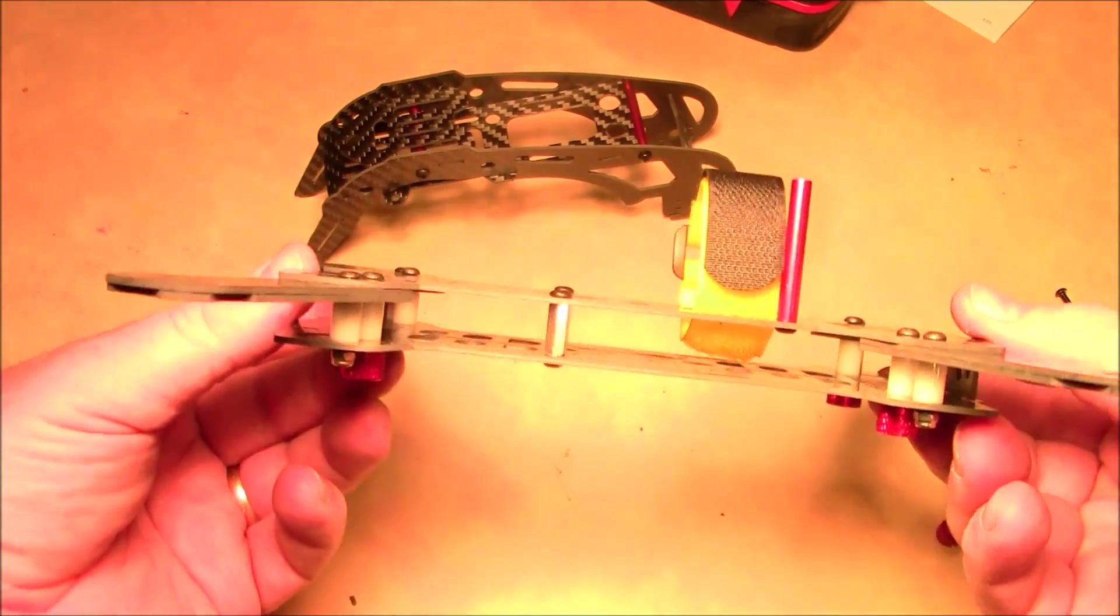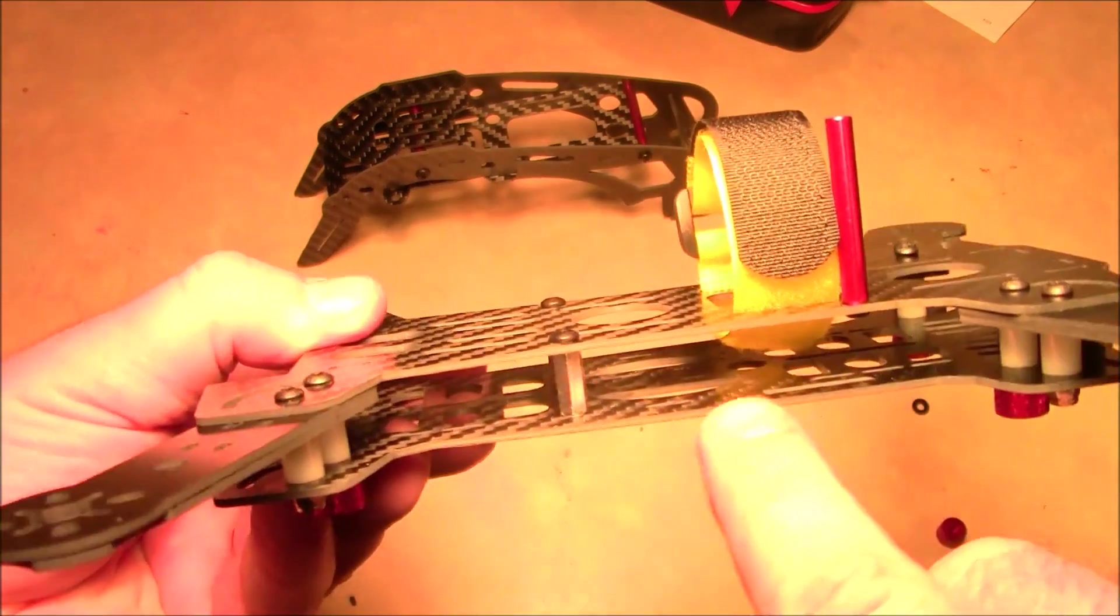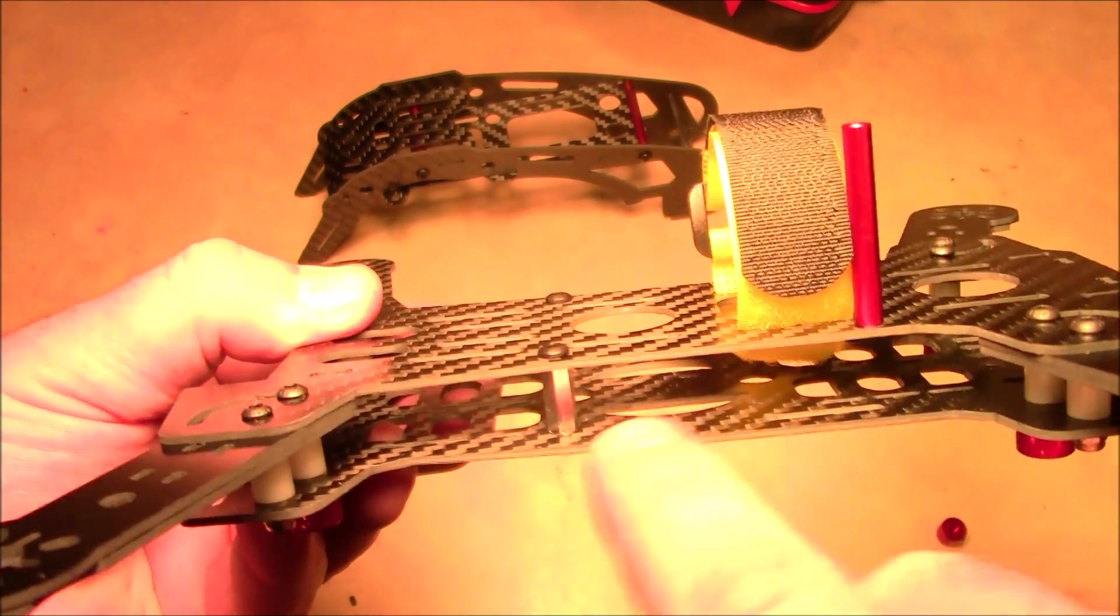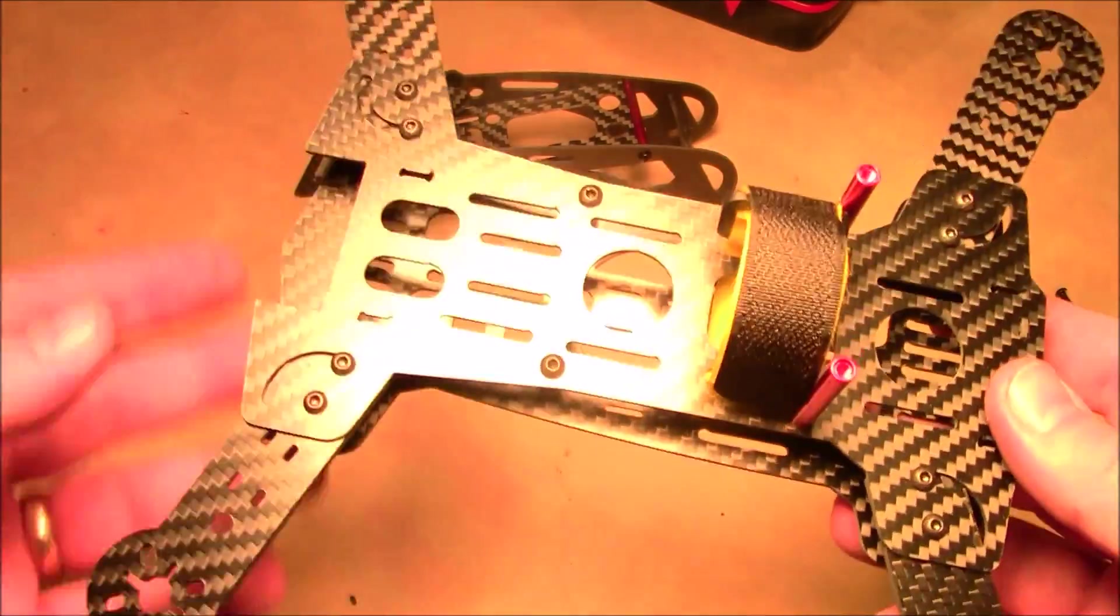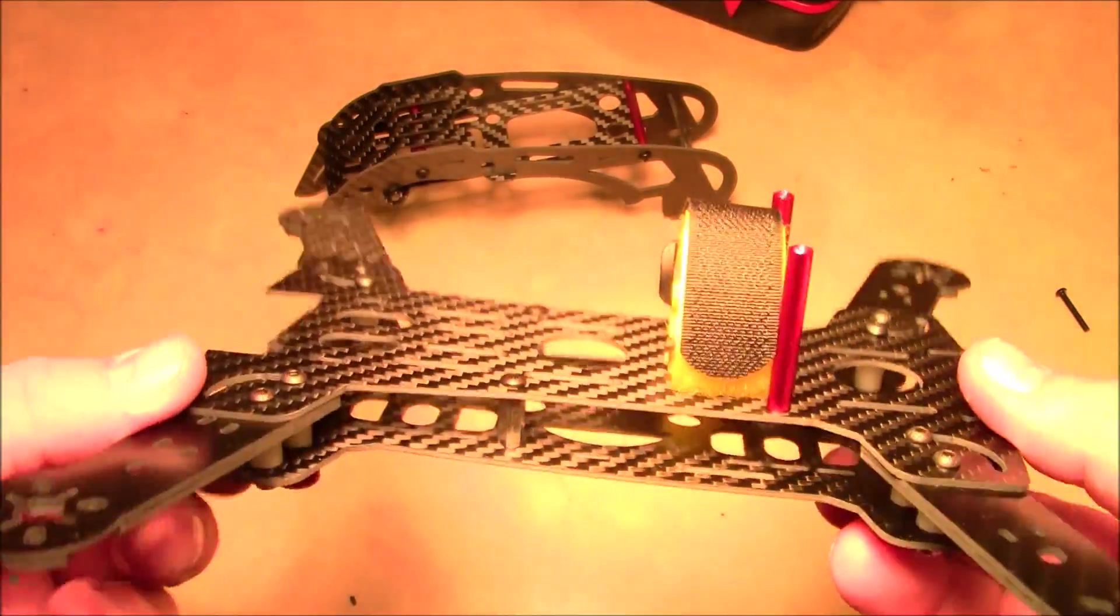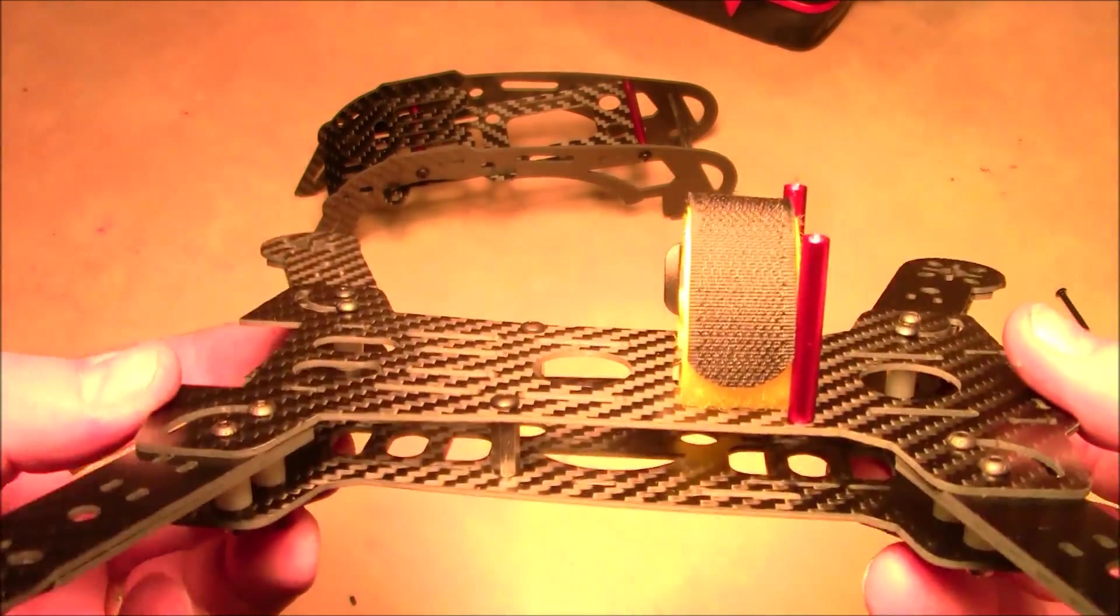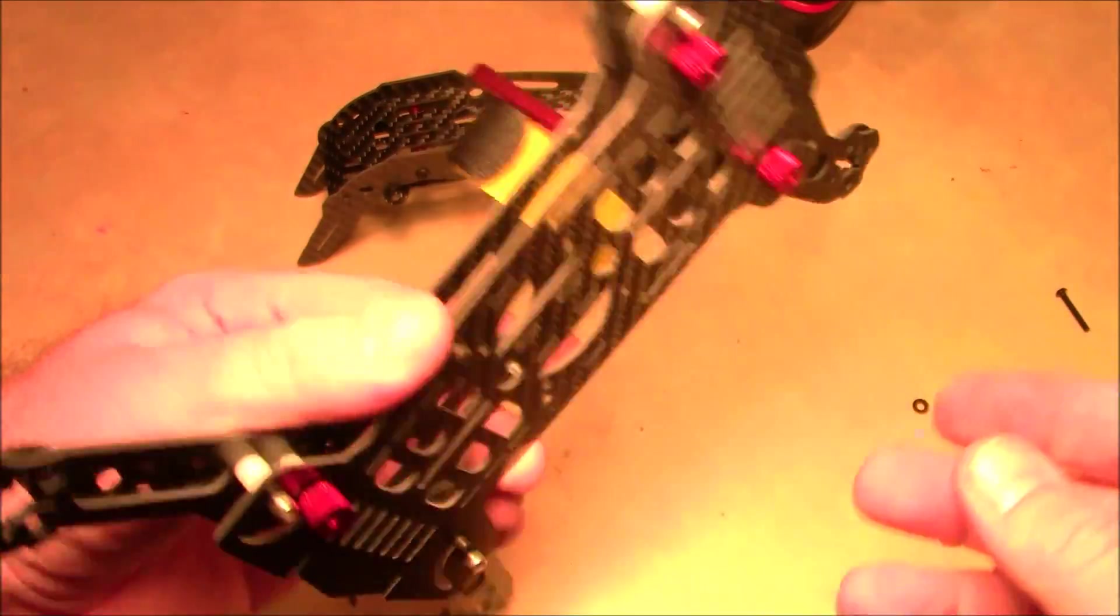This is the lower part of the quad, now fully assembled. You would have your Naze32 or your CC3D mounted inside here, which would be very nice. It's not going to get any damage at all inside there unless you totally smash it. But then you got other things to worry about.